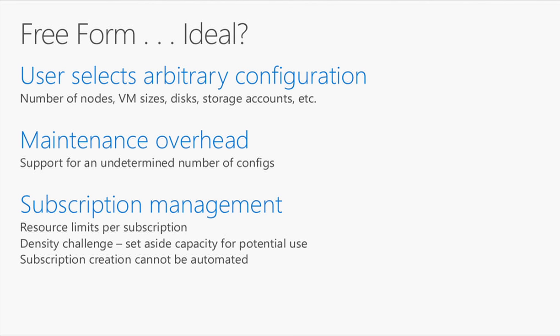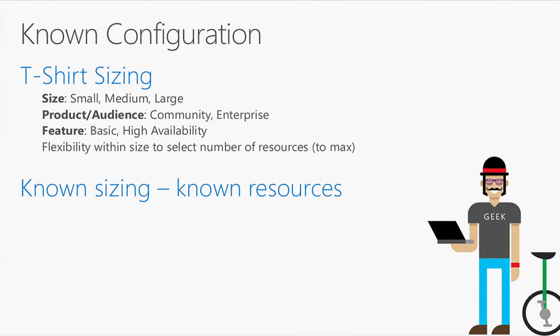The typical best practice is to use a known configuration — t-shirt size your solution. Small, medium, large. For a database cluster, small might be a bunch of A4s; large production uses DS14s with premium storage. You might give away a community version for free at a certain size, and an enterprise version adds high availability. As long as you have these known sizes, it's much easier to support, because you know the cost, performance, and maintenance characteristics.